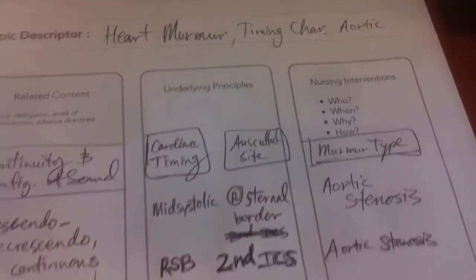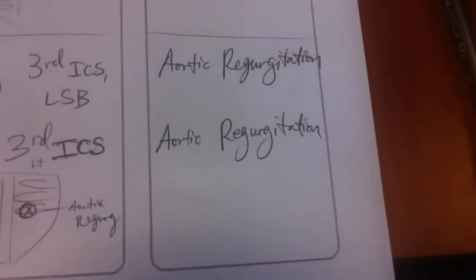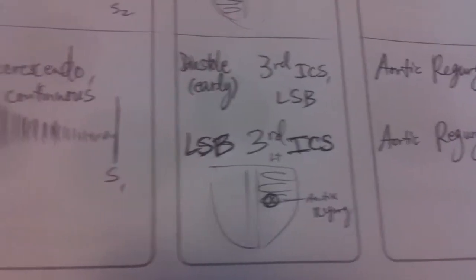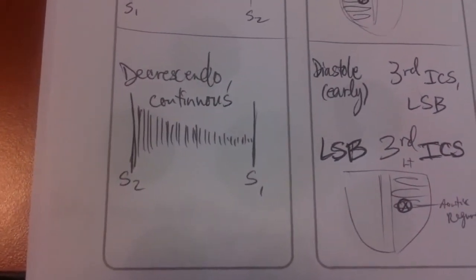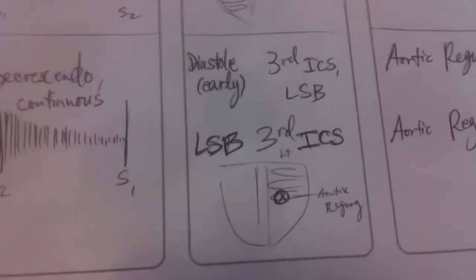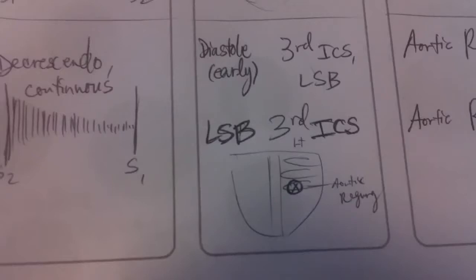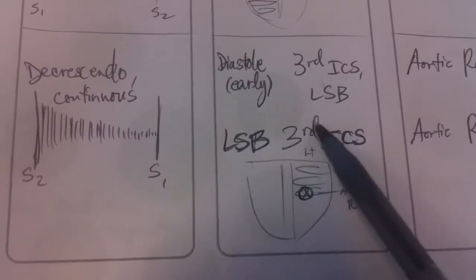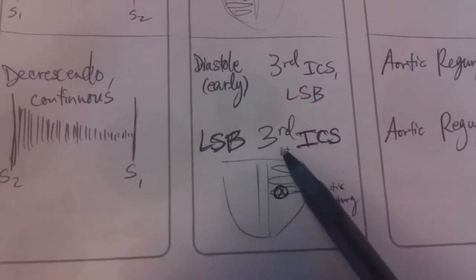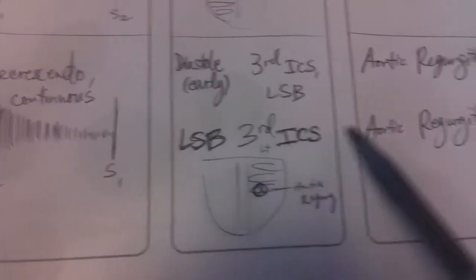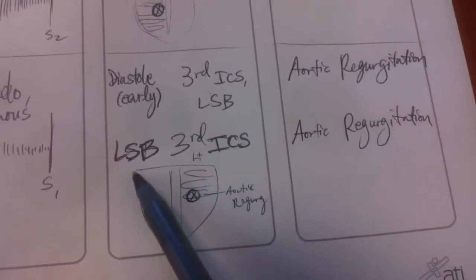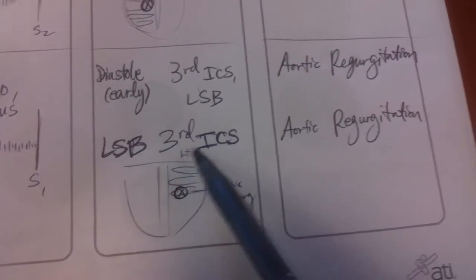We're looking at timing characteristics for aortic areas. Aortic regurgitation is on the left sternal border, third intercostal space. It's decrescendo — just going down. The way to remember it is 'who's left on third,' like in baseball. Left sternal border, third intercostal space: aortic regurgitation.